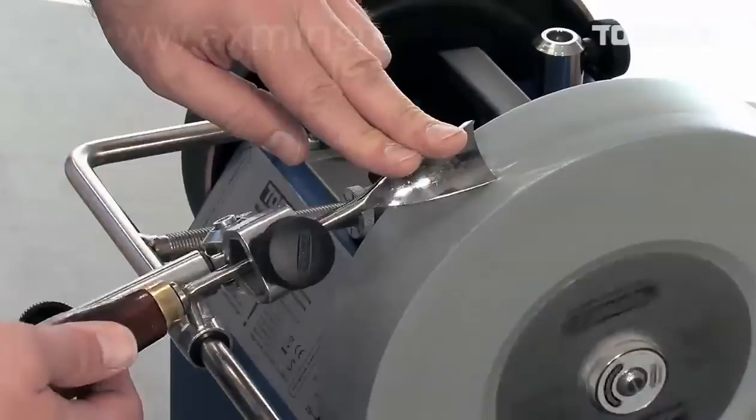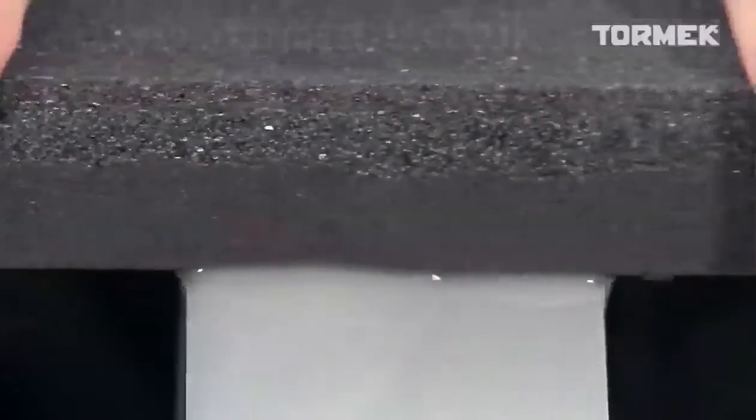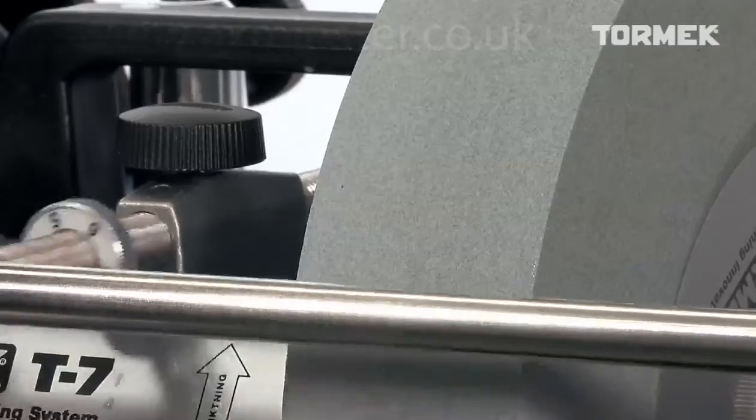For fine, thin edges, adjust the stone with the fine side of the stone grader, and it will work like a 1000 grit stone. In this way, you will not remove too much steel.